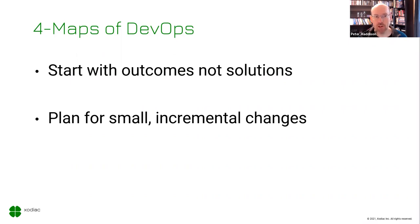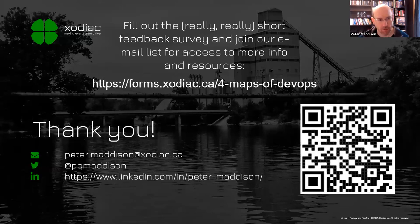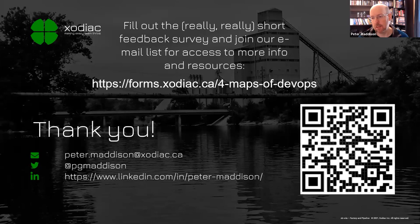Don't boil the ocean — start small and plan for incremental changes into the environment. Mapping exercises don't have to take a long time; you don't have to plan for months and years. Plan for four to six months out, and be able to execute these mapping exercises frequently in just a few hours. The value is in the mapping, not the map. The value is in coming together, collaborating, having the discussion, and building out a common understanding of what things look like. That's everything about the Four Maps of DevOps in 20 minutes.